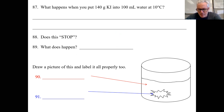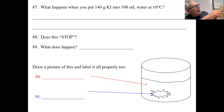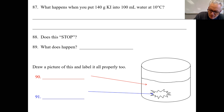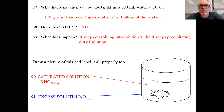What happens if you put 140 grams of potassium iodide (KI) into solution at 10 degrees centigrade? At 10 degrees, it actually looks like only 135 grams fits. So 135 grams fits, and 5 grams is at the bottom.